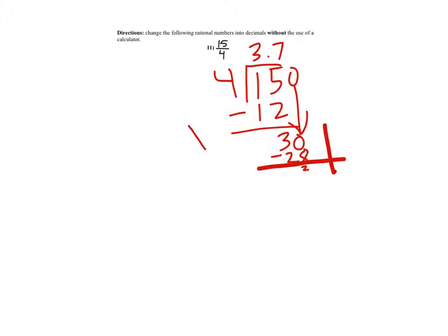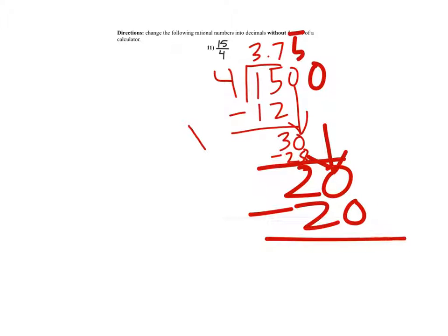Then you bring down a zero. So that would be 20, and 4 can go into 20 five times exactly. So it would be zero.